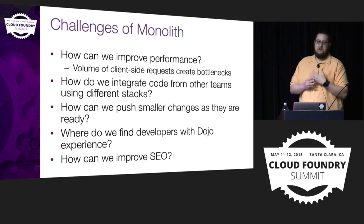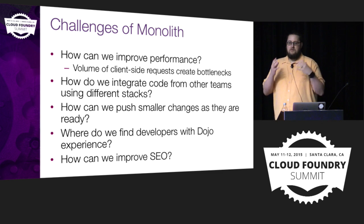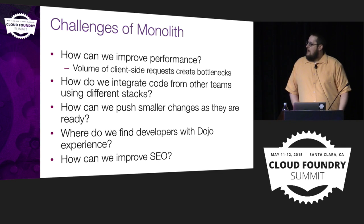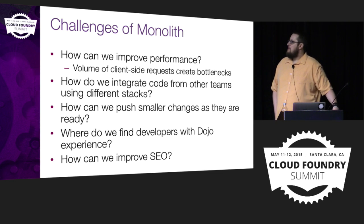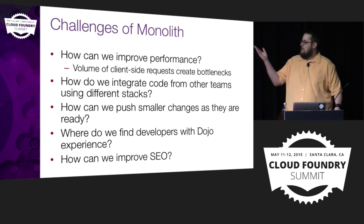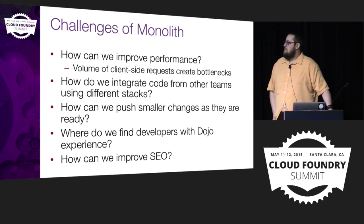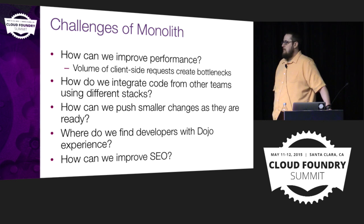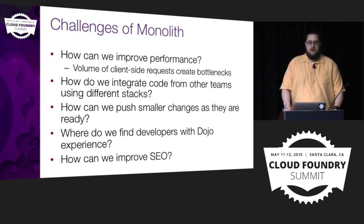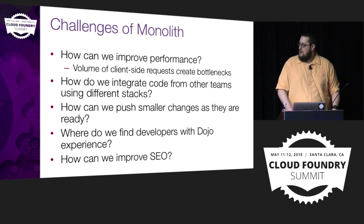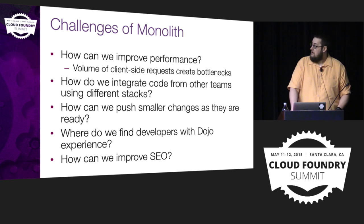We want to get to a point where we can push smaller changes as they're ready — as sub-teams have them ready — rather than monthly or bimonthly pushes of one big code base. The monolith is built in Dojo, and when we want to add to our team or hire outside of IBM, where do we find Dojo developers? And the last point is that with the single-page app and client-side routing of URLs, our SEO story isn't great.